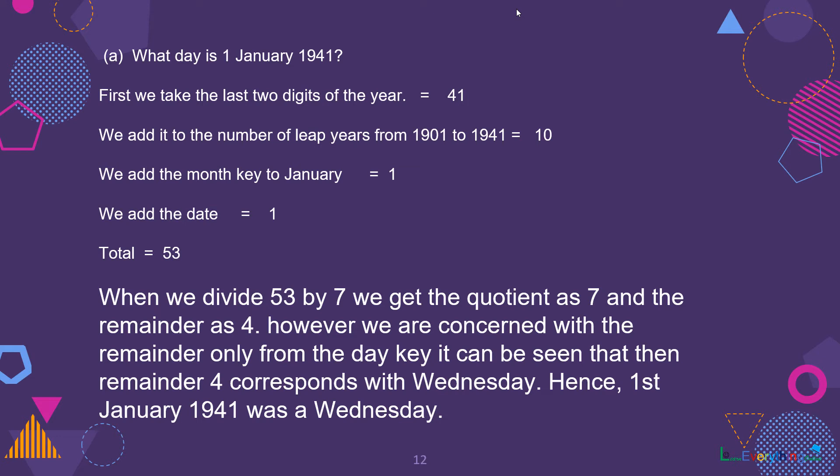So we get a complete total as 53. When we divide 53 by 7, we get the quotient as 7 and the remainder as 4. However, we are most concerned with the remainder only.